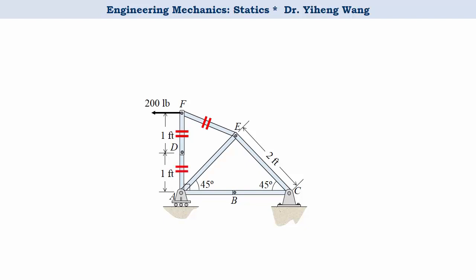Now from inspection, we see that at joint E we only have two unknowns, so we solve for joint E next.